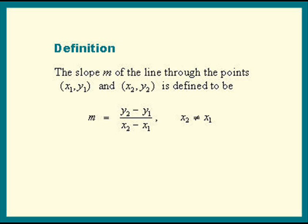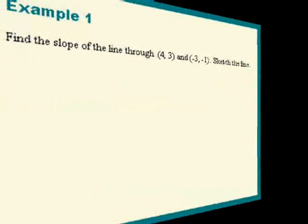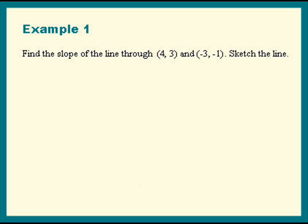Let's try a couple of examples. In example one, we'll find the slope of the line through (4, 3) and (-3, -1).